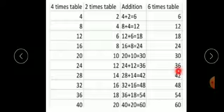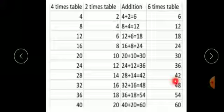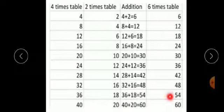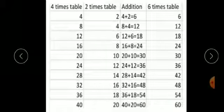24 plus 12 gives 36, so 6 sixes are 36. 28 plus 14 gives 42, so 6 sevens are 42. 32 plus 16 gives 48, so 6 eights are 48. 36 plus 18 gives 54, so 6 nines are 54. 40 plus 20 gives 60, so 6 tens are 60. Thus we can make the 6 times table by adding the 4 times and 2 times tables.